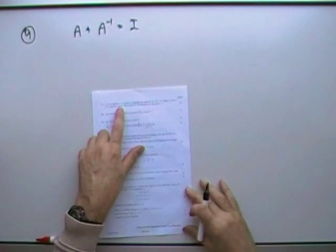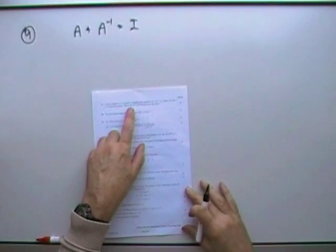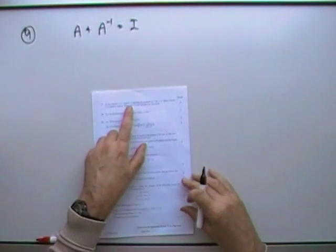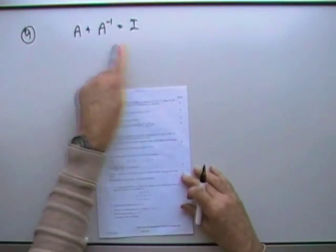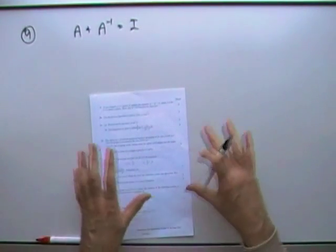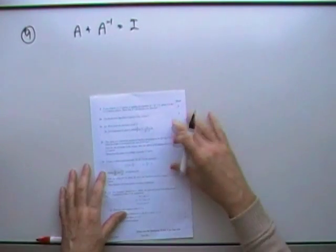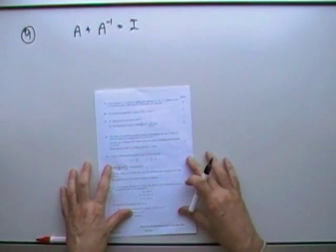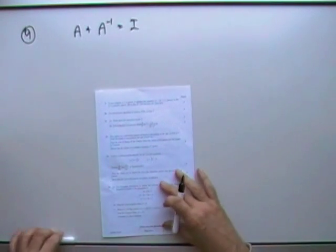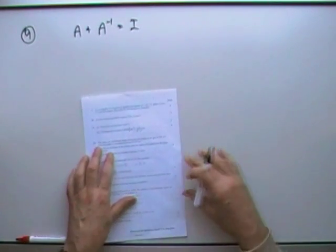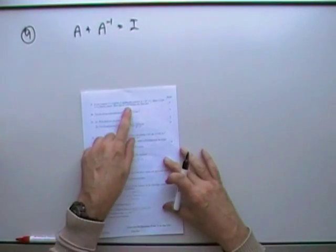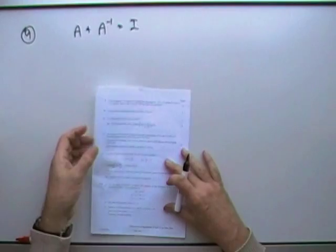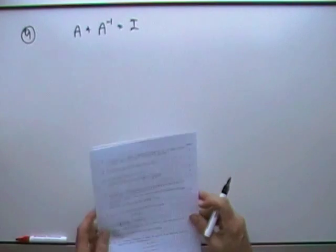Question 9. A non-singular n by n square matrix satisfies this equation — just matrix algebra, no numbers, which is really quite trivial. Show that A cubed equals some multiple of I.